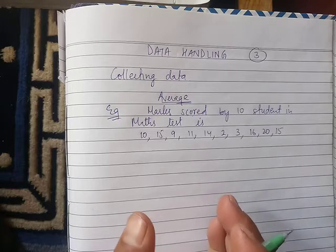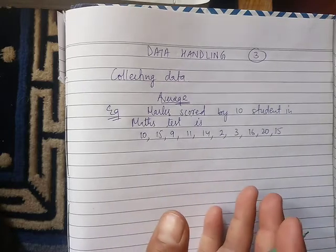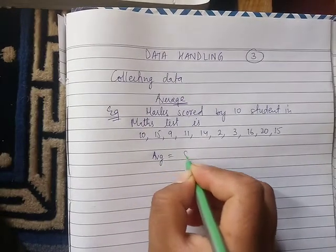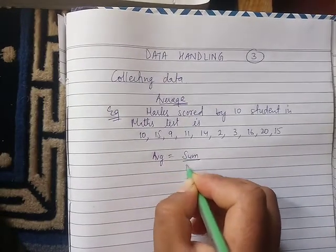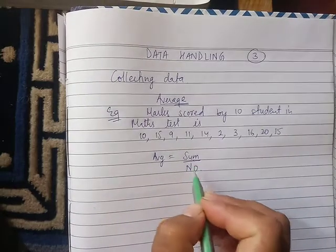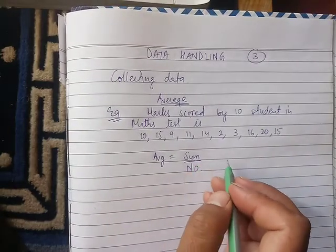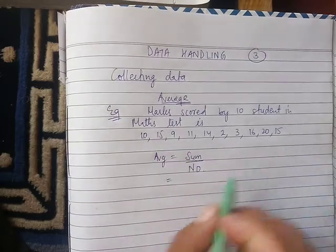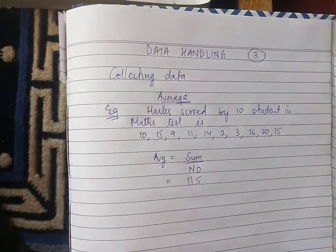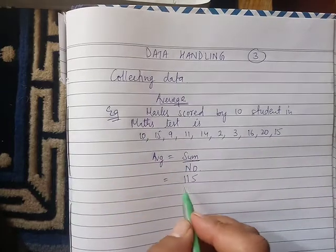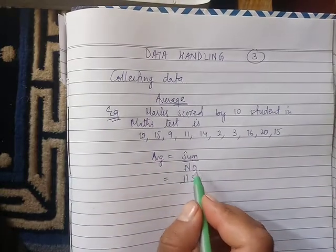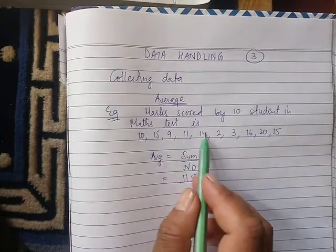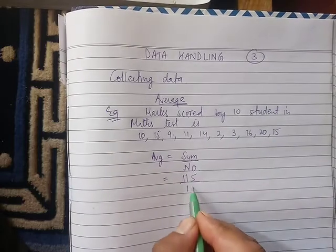This is class performance. It's an average. The formula: the total sum is 115. The number of students is 1, 2, 3, 4, 5, 6, 7, 8, 9, 10 — the total count is 10.